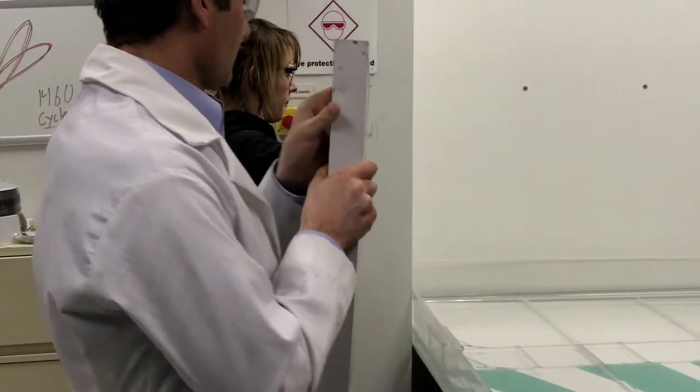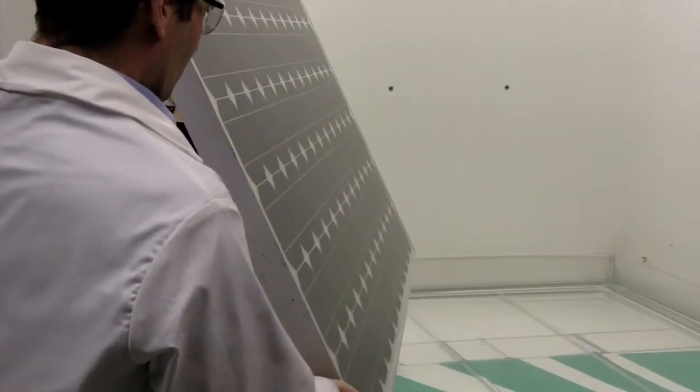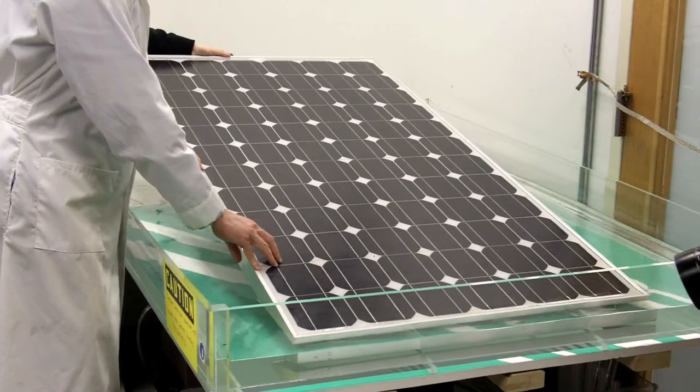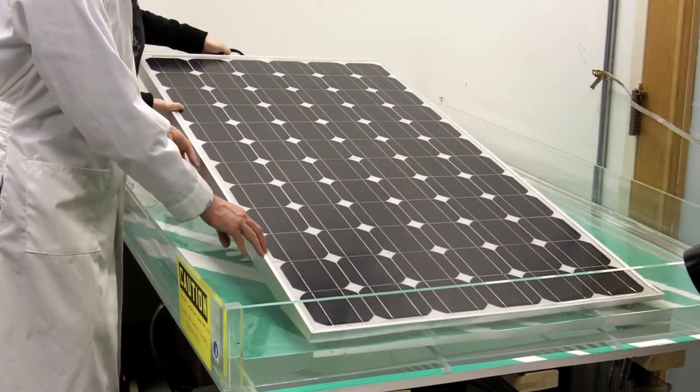Another test involves subjecting the panel to high voltages to ensure that there are no leaks of electrical current. After the panel is submerged, any leaking current can be measured through the water.